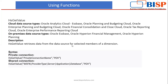HSGetValue retrieves data from the data source for selected members of a dimension. Whatever data is there — suppose we have already described all the POVs and provided the name of the connection — the value we are retrieving from the application can be pulled into a particular cell in the Excel sheet. This is the syntax for private connection and shared connection: you provide the name of the connection and then define the POV.